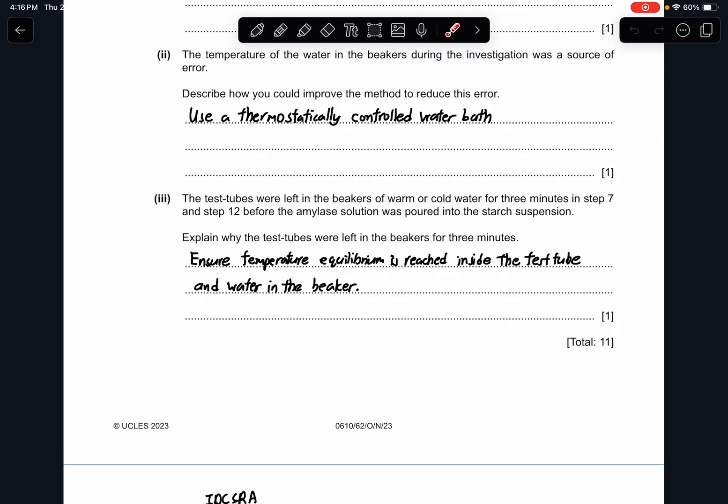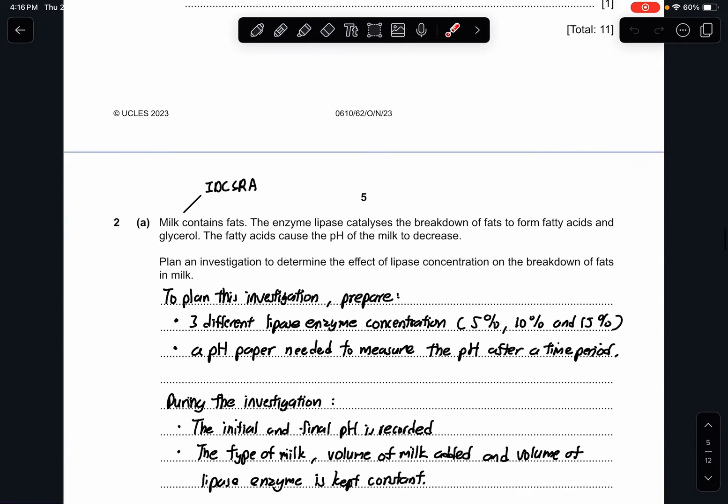Part 3, the test tubes were left in the beakers of warm or cold water for 3 minutes in step 7 and step 12 before the amylase solution was poured into the starch suspension. Explain why the test tubes were left in the beakers for 3 minutes. They will be left there for a short amount of time just to ensure the equilibrium in the temperature is achieved, where the contents of the test tube is equal to the temperature of the water in the beakers. It has to be the same, meaning no net change in temperature. Thermal equilibrium.